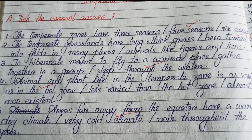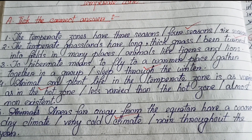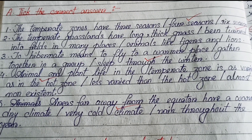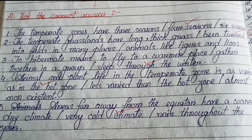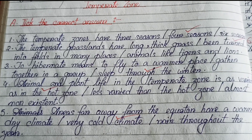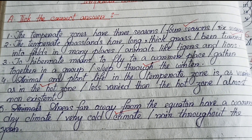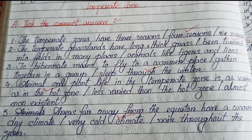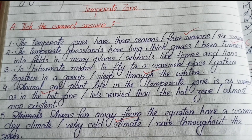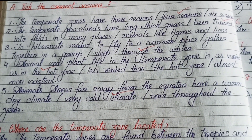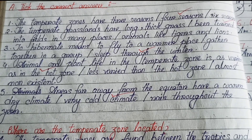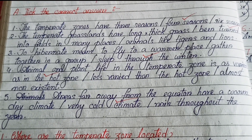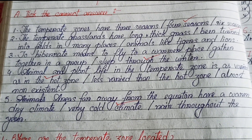Number three: to hibernate means to fly to a warmer place, gathered together in a group, or sleep through the winter. The answer is sleep through the winter. Number four: animal and plant life in the temperate zone is as varied as in the hot zone, less varied than the hot zone, or almost non-existent. The answer is as varied as in the hot zone. Number five: areas far away from the equator have a warm dry climate, very cold climate, or rain throughout the year. The answer is very cold climate.